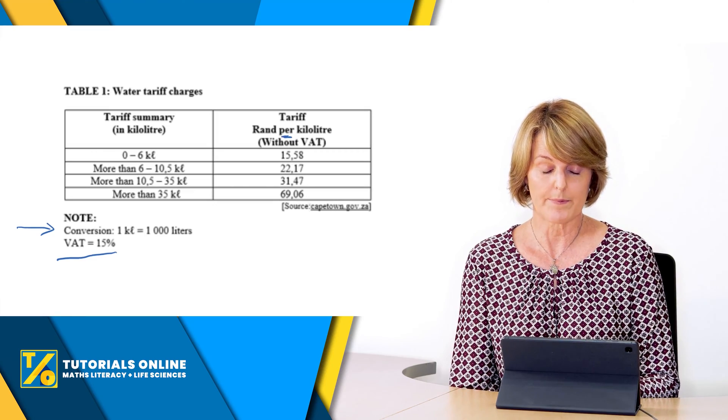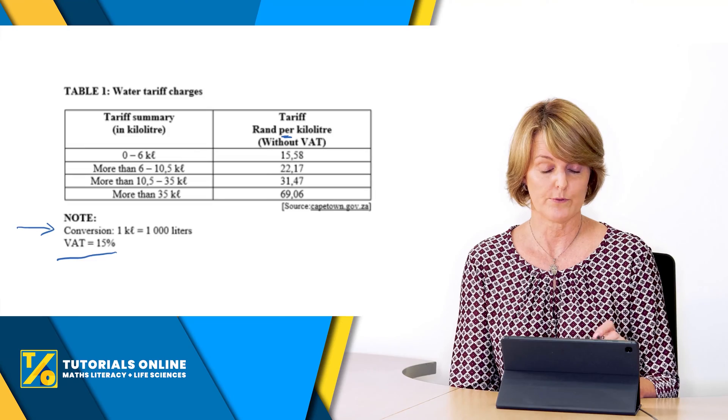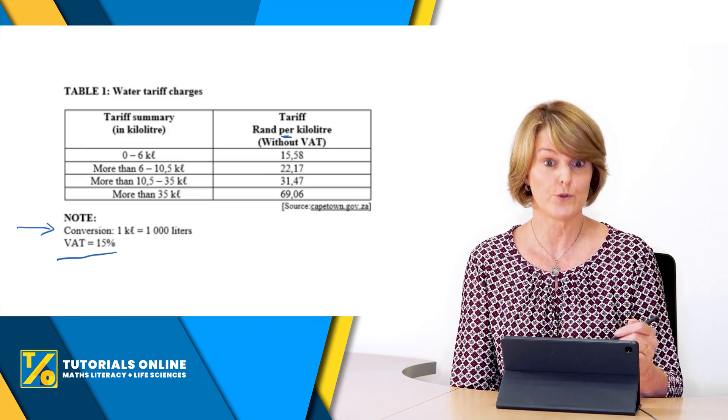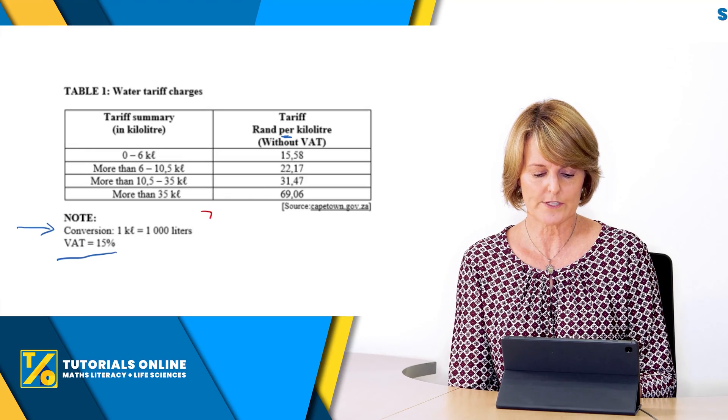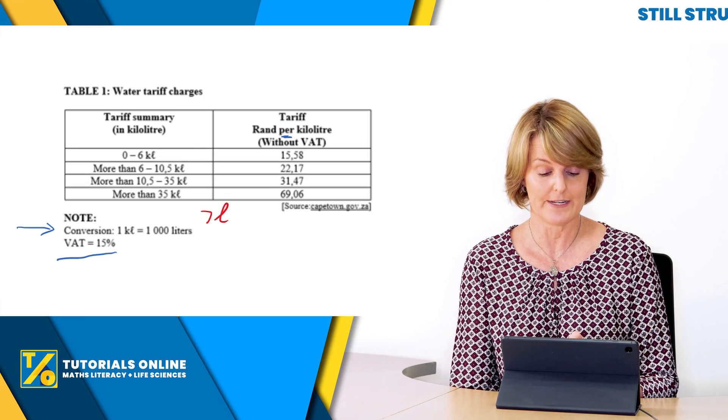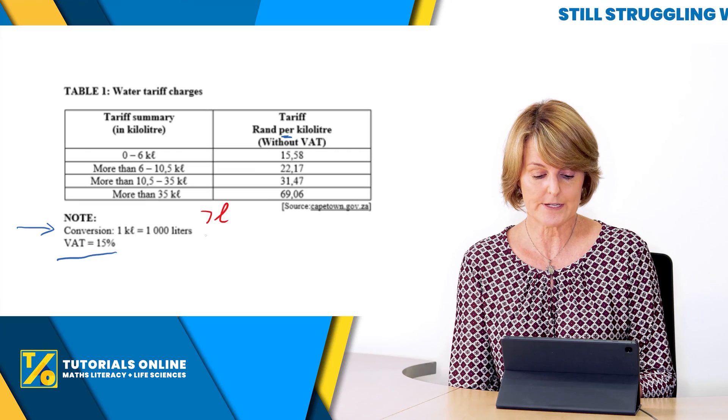On the right hand side you can see the amount per kilolitre that you pay. Look there, it says per kilolitre goes up in each bracket as you increase your usage. I just want to quickly show you an example here. If let's say your consumption or what you're using is seven litres, then for the first six litres...